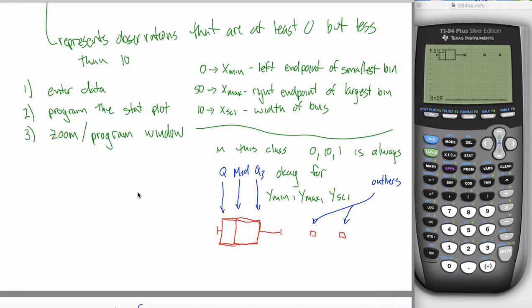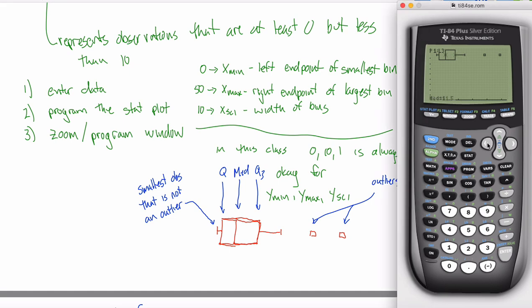What's going on here is this is the smallest observation that is not an outlier. So in this specific example, the smallest observation that's not an outlier is the smallest observation, which is why my calculator is calling it the minimum. But it won't always be the minimum. If I had an outlier down here, it wouldn't be the minimum. It would just be the smallest observation that's not an outlier.